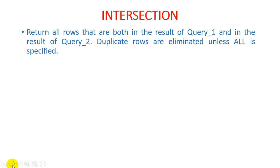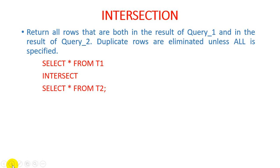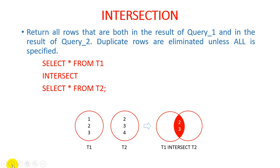The second set operation is intersection. It returns all rows that are present in both the result of query 1 and the result of query 2. Duplicate rows are eliminated unless ALL is specified. For example: SELECT * FROM T1 INTERSECT SELECT * FROM T2. If T1 has records 1, 2, 3 and T2 has records 2, 3, 4, then the result returns only 2 and 3, since those are the common values. Records 1 and 4 are removed as they are not repeated in both tables.